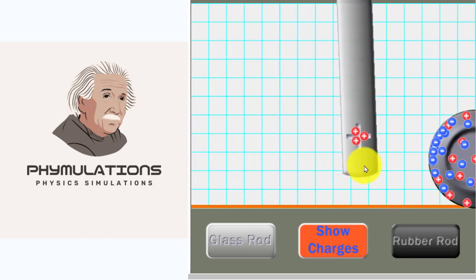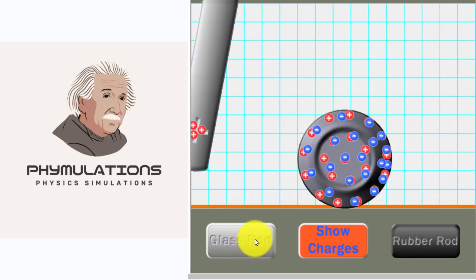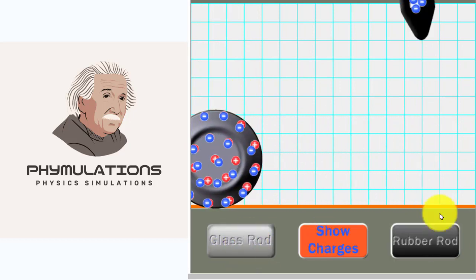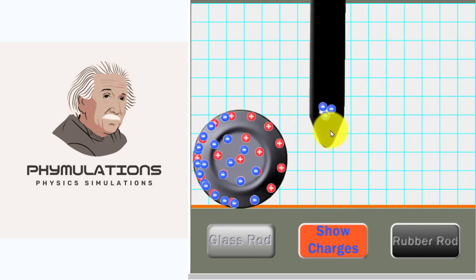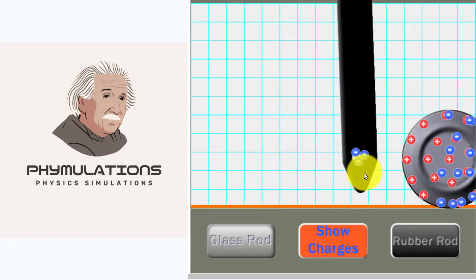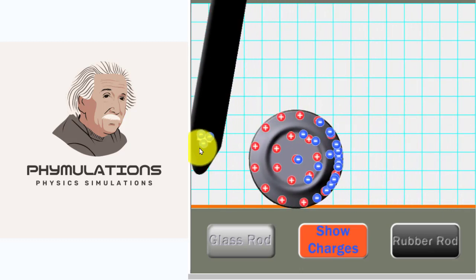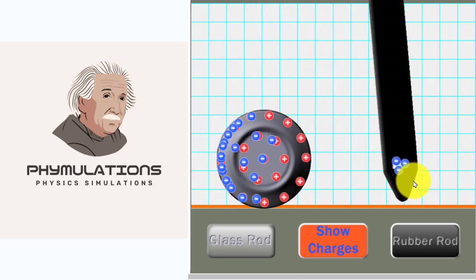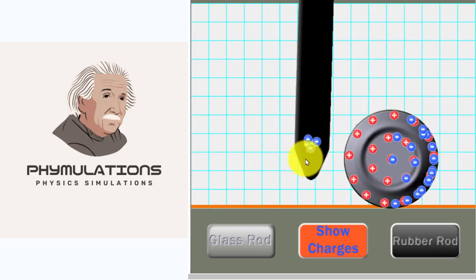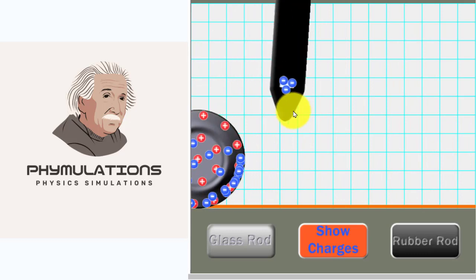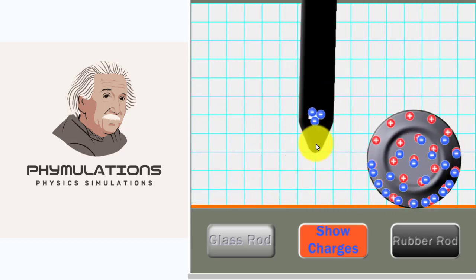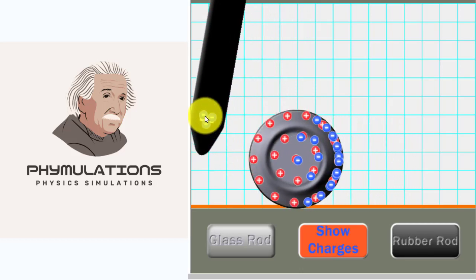Now just get rid of the glass rod and bring a negatively charged rubber rod. What you are observing? Again the tin can is attracting towards the negatively charged rubber rod, but this time the electrons are getting repelled and the polarization of the metal is causing the tin can to attract towards the rubber rod.